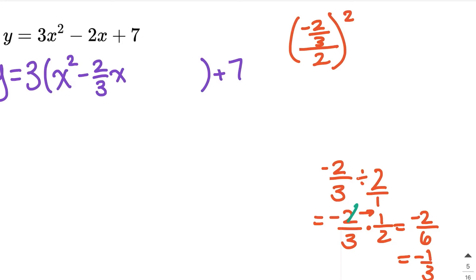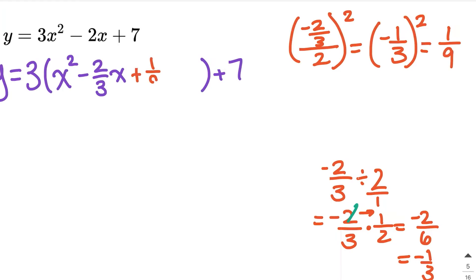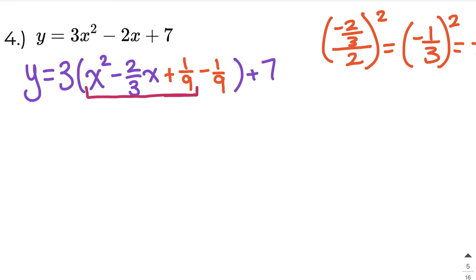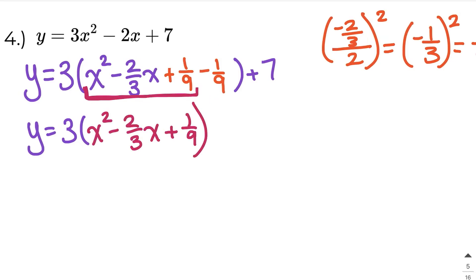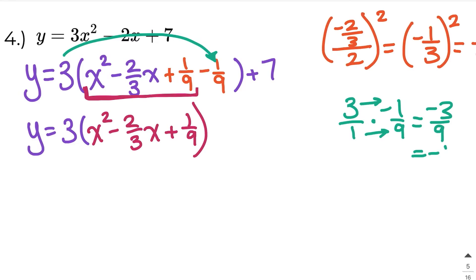So when I divide by 2 I get negative 1 third, but I still have to square it. When I square it, I have to square everything inside the brackets. I square the negative 1 — negative 1 times negative 1 is positive 1 — and I square the 3 — 3 times 3 is 9. So I write plus 1 over 9. But if I add 1 over 9, I also have to subtract 1 over 9. Now I have to distribute this 3 through to negative 1 ninth: 3 times negative 1 is negative 3, and 1 times 9 is 9, which reduces to negative 1 third.